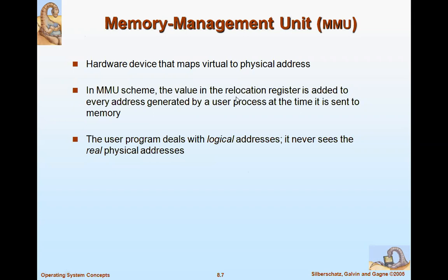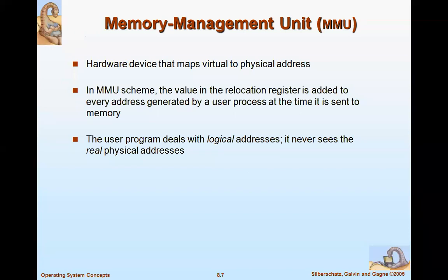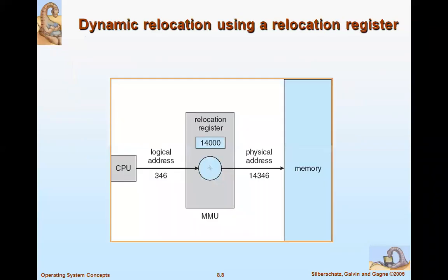In the MMU scheme, a relocation register is added to every address generated by the user process when it is sent to memory. The user program always deals with the logical address and never sees the real physical address — it is automatically calculated by the system. The diagram shows dynamic relocation using a relocation register.